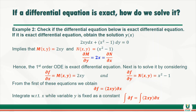Let us consider a full example. We are asked to check if the differential equation is exact and, if so, find the solution. The equation is 2xy dx + (x² − 1) dy = 0. Here M(x, y) = 2xy and N(x, y) = x² − 1. To check exactness: differentiating M with respect to y gives ∂M/∂y = 2x; differentiating N with respect to x gives ∂N/∂x = 2x. Since they are equal, the differential equation is indeed exact.